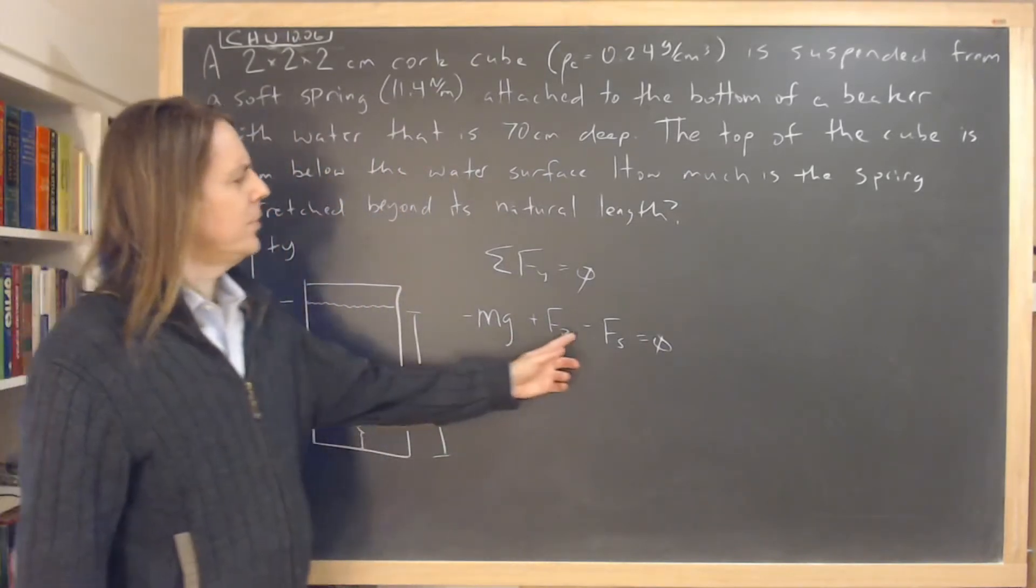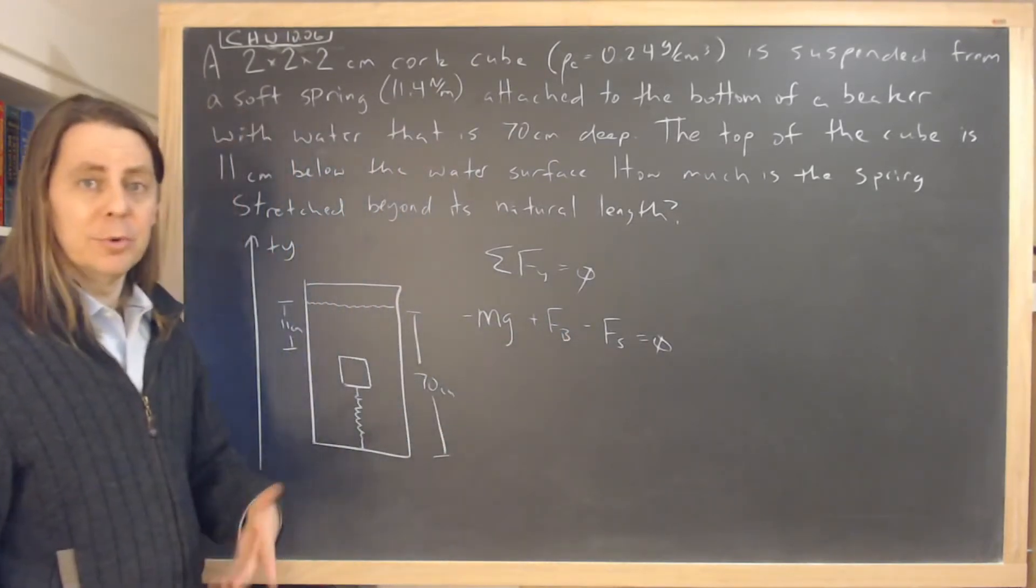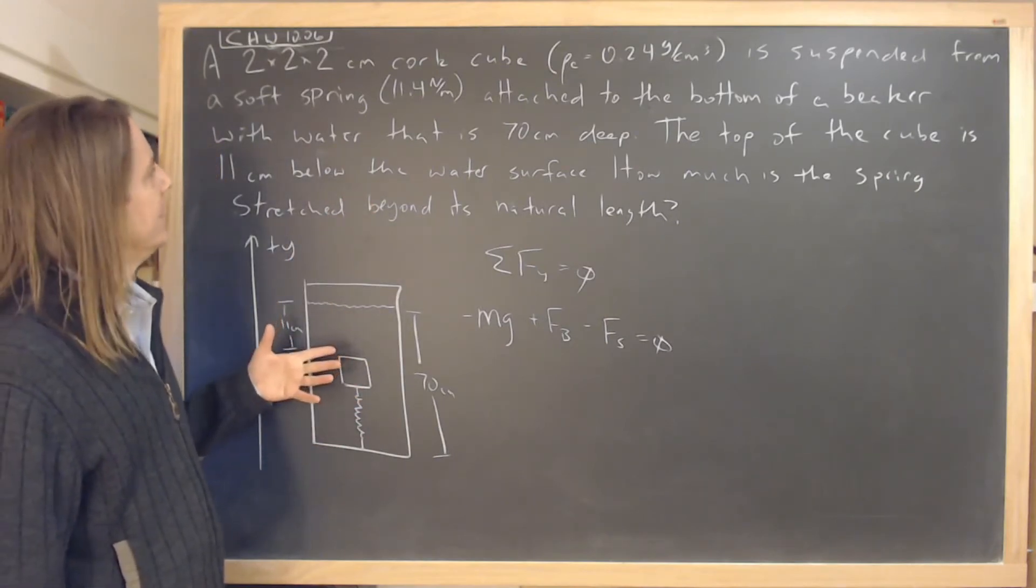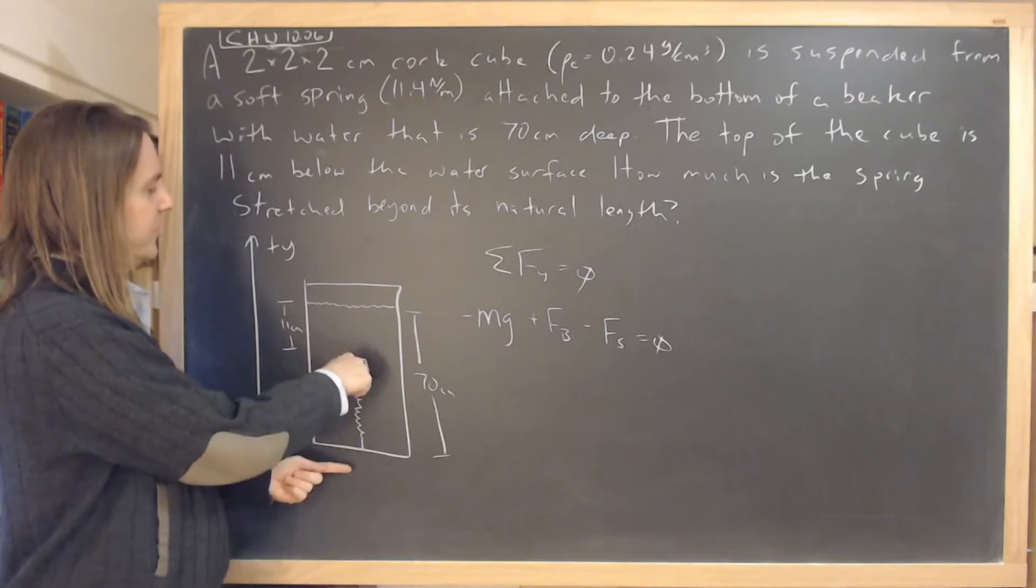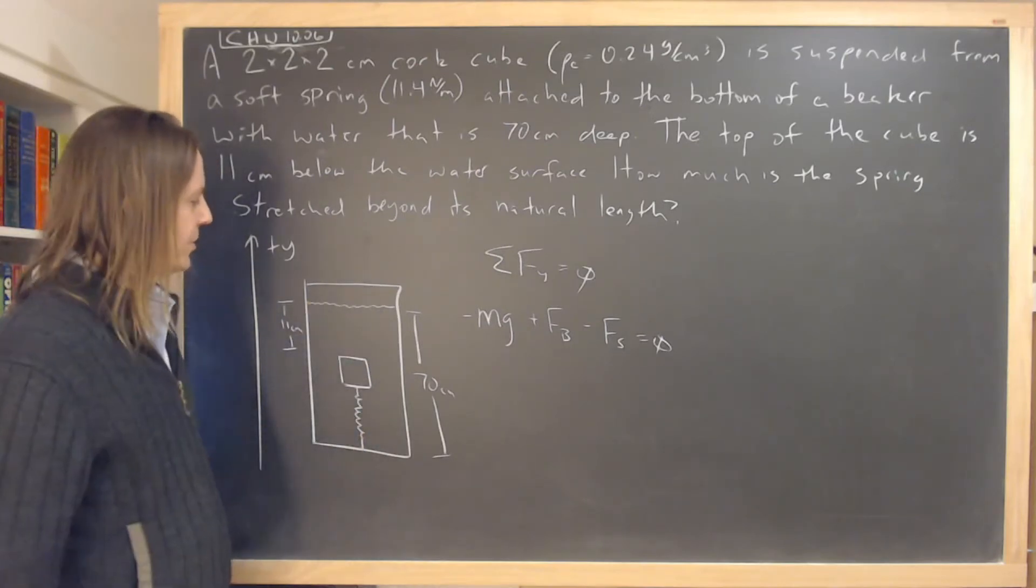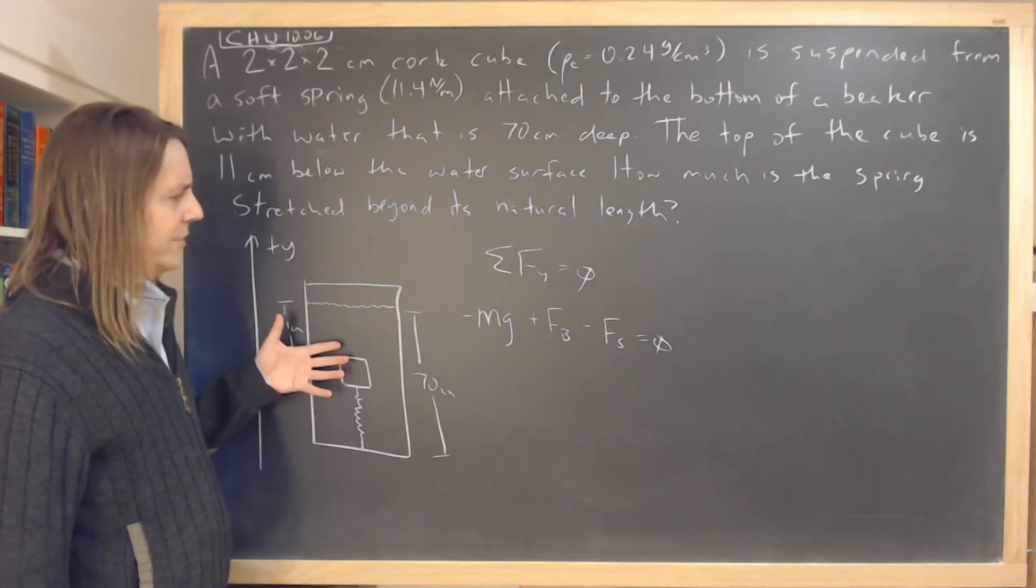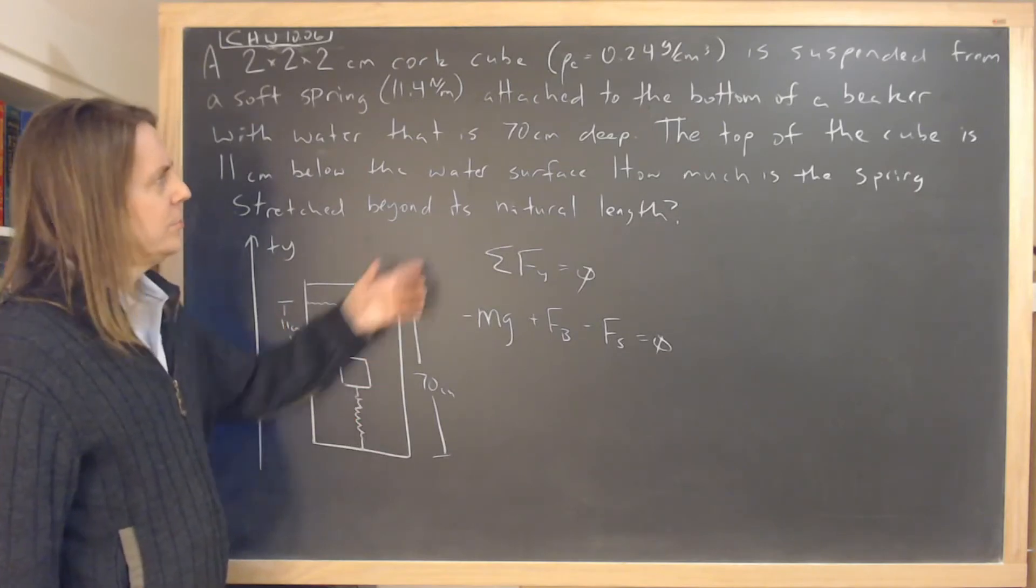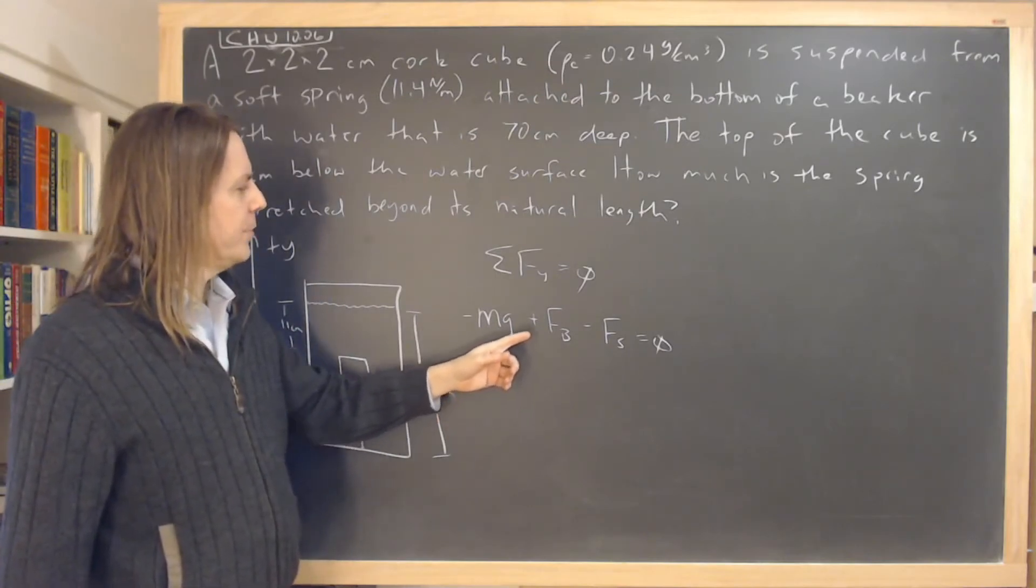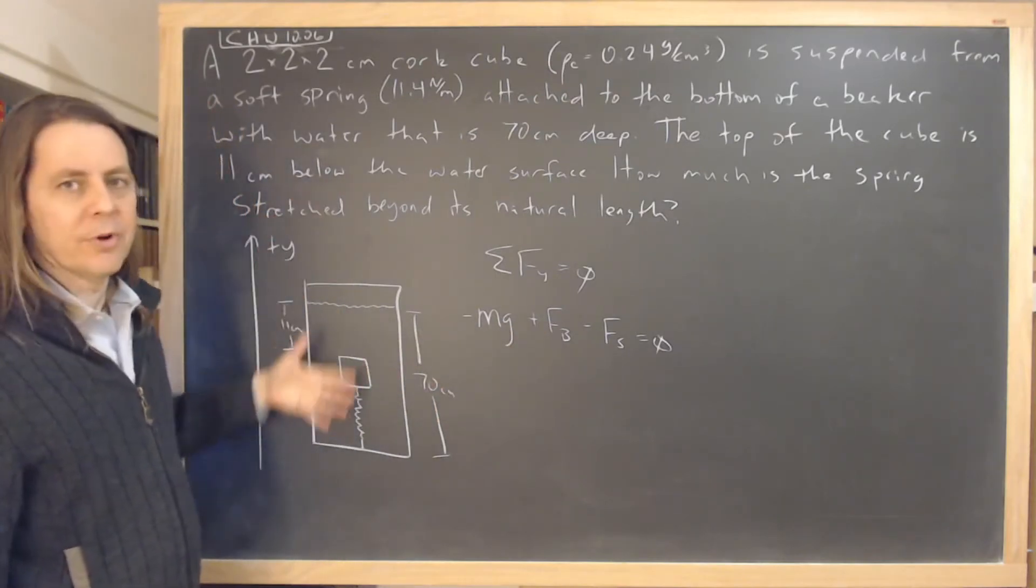And if you're not sure how I knew that was negative or how you would know that's negative in a problem, one is that it said that the spring is extended. So if you extend the spring, the force is opposite direction of the extension. And also because that's the only way this thing is going to work because you know that the buoyant force is bigger than the weight. So it'll fly up.